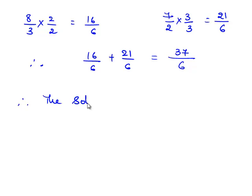Therefore, the solution for 2 2/3 plus 3 1/2 is 37/6.